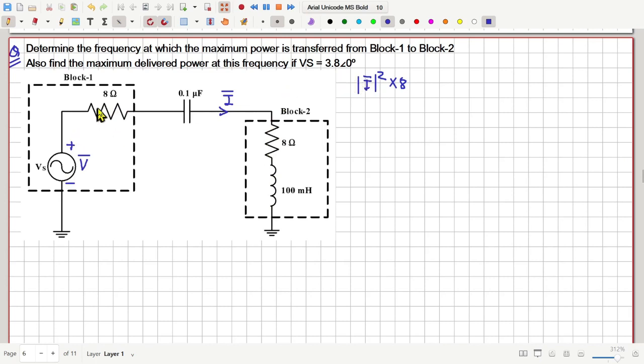Now, this total impedance has one resistor, another resistor, then a capacitor and an inductor. And this current we want to be maximum. And this frequency here is variable.